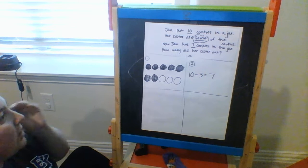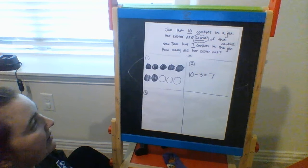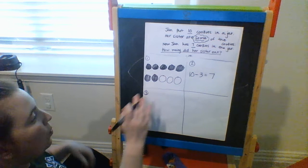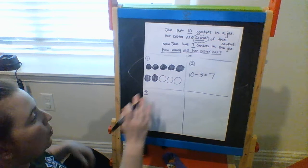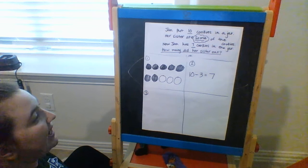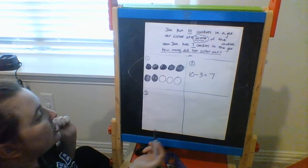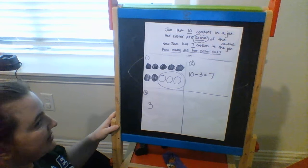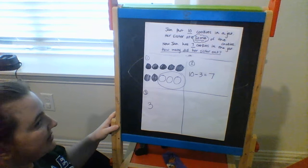I've made my picture and my number sentence. Now the next step is to write the real answer. In order to do this, I have to go back to the question: how many cookies did her sister eat? Well, it's either going to be 7 or 3. Her sister did not eat the 7 — those are the ones still left in the jar. So I know that these 3 cookies have to be the cookies that her sister ate. The answer is 3 cookies, because she took 3 away.